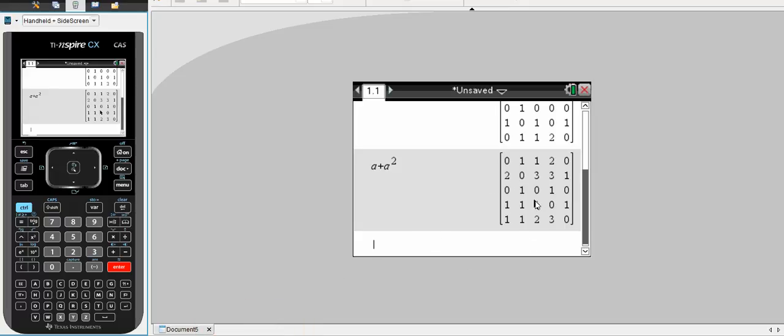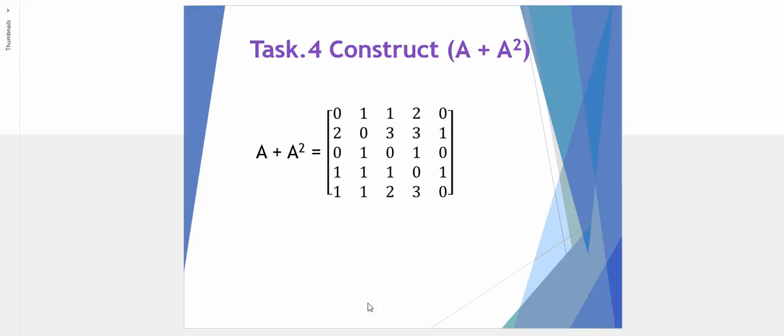It's the sum of the individual elements from a single step or single stage matrix, the adjacency matrix, with a double or two-step, two-stage matrix. So here is our A plus A squared, our single step and our double step.